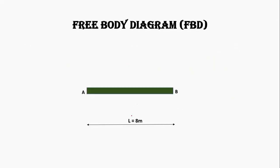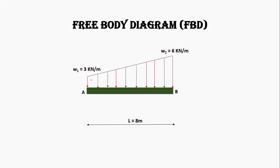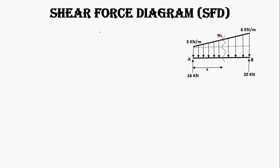Let's draw the free body diagram. We have beam AB of 8 meter length with trapezoidal loading of 3 kN/m at A and 6 kN/m at B, with support reactions RA = 16 kN and RB = 20 kN respectively. Now let's draw the shear force diagram by deriving the shear force equation.